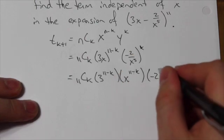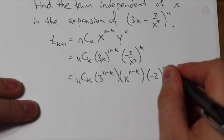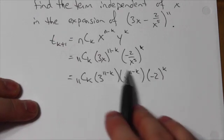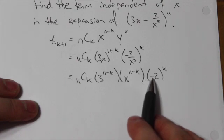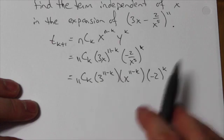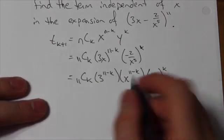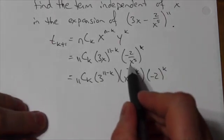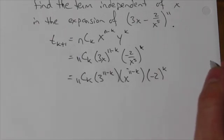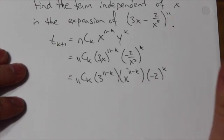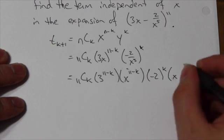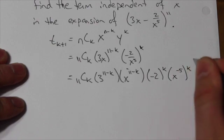So this is going to be 11Ck. I'll distribute that exponent to both factors here. So this will be 3^(11-k) * x^(11-k). I will do the same thing over here. I will keep the negative together with the 2, so this will be (-2)^k. Notice I'm putting the k outside the brackets because there's a negative in there that I need to make sure is together with that. I didn't worry about it over here because the 3 was positive.